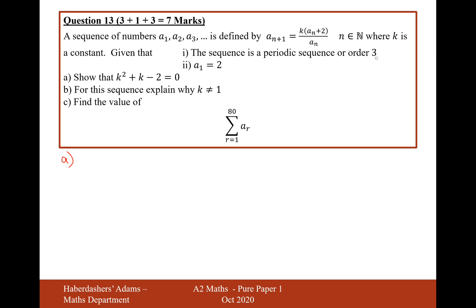What periodic sequence of order 3 means is that the sequence repeats itself every three values. So what we'll find here is that a4 should equal 2 as well, because it will go through a1 which is 2, then a different number for a2, a different number for a3, and then back to 2 when it gets to a4.